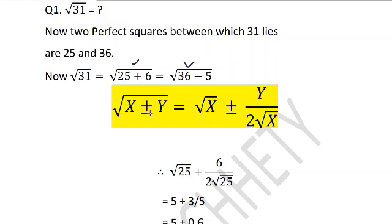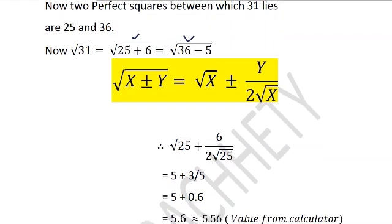Now √31 can be written as √25 + 6. I will apply this formula here. This plus minus sign shows if there is plus in the formula you will put plus, if there is negative you will put negative. So here there is plus. I will take this as X, this as Y. So the formula is square root of X, that is √25, plus this Y (that is 6) divided by double of this number, so double of √25.